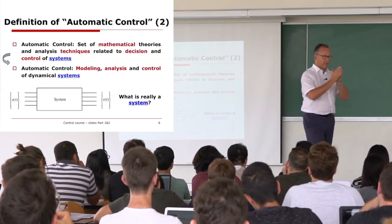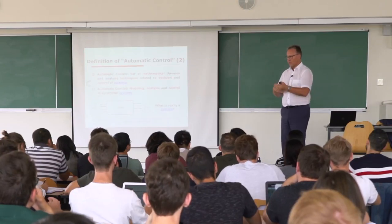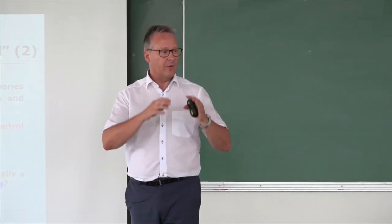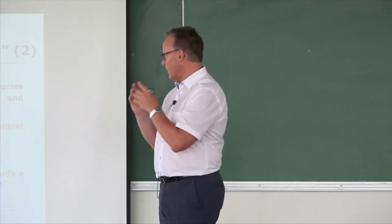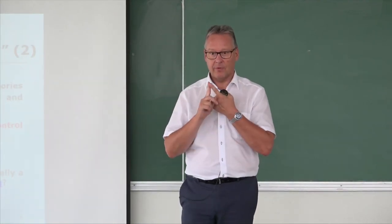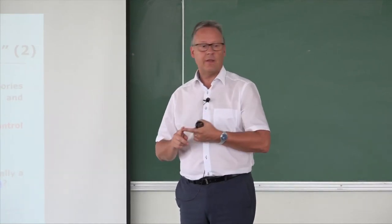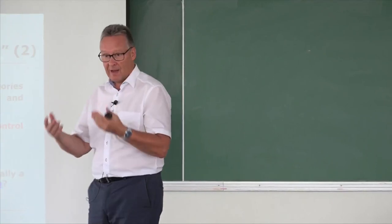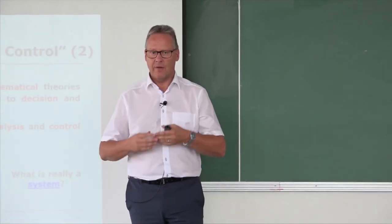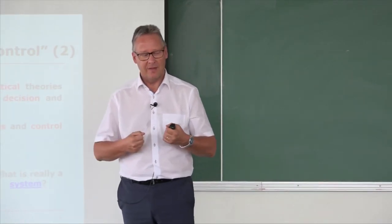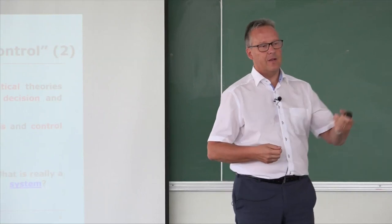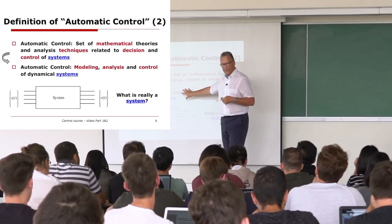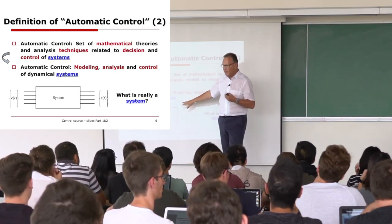Automatic control in industry always involves three steps. First is modeling, and it's a very important one because if your model is not correct, the control will not work. You need to spend maybe at least 50% of the time dedicated to the study to have a good model, identify the parameters, check the validity of the model, and if your system is nonlinear, use a linearized approach. We will always start with modeling during the practice sessions and lab work.